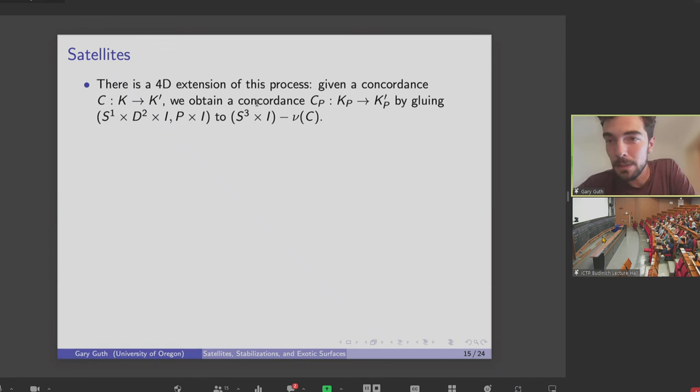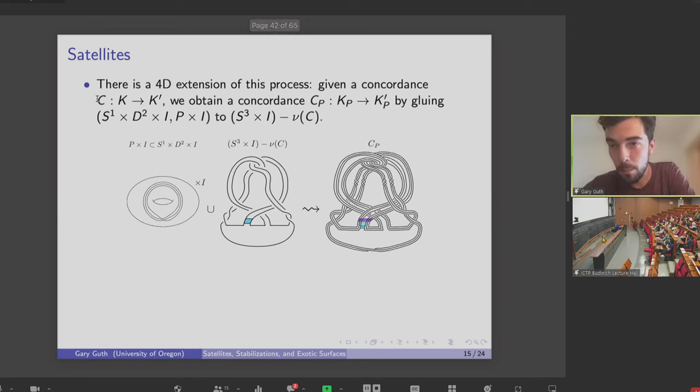And the really powerful thing here is actually there's a four-dimensional extension of the satelliting business. If I have a concordance between two knots, which I'll call C. And recall a concordance is an annulus embedded in S3 cross I, such that one boundary is K and the other boundary is K prime. This induces a concordance between the satellites of those two knots in almost the same way. I take some pattern knot in the solid torus and I cross this with I. Then what I can do is I can just cut out a neighborhood of the whole concordance in S3 cross I, and I can glue these two things together. And just by construction, this new thing is going to be a concordance between the satellite of my first knot to the satellite of the second.